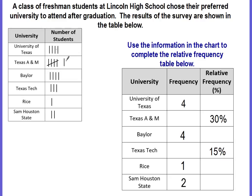A class of freshman students at Lincoln High School chose their preferred university to attend after graduation. The results are shown in the table: four students chose University of Texas, six chose Texas A&M, four chose Baylor, three chose Texas Tech, one chose Rice, and two chose Sam Houston State University.